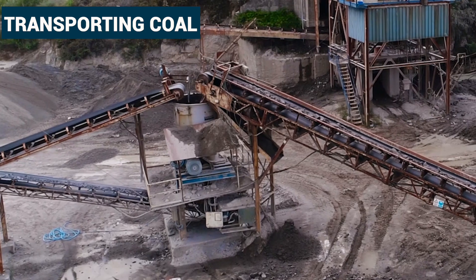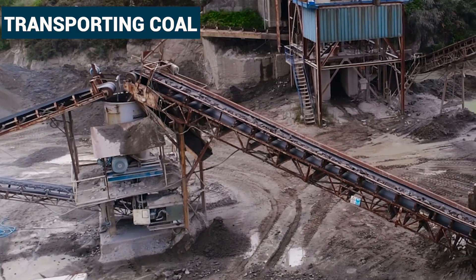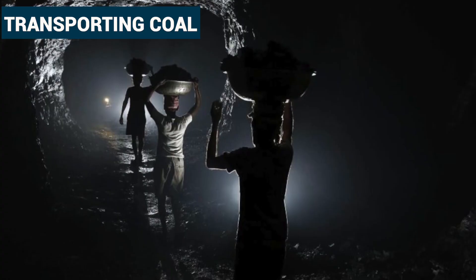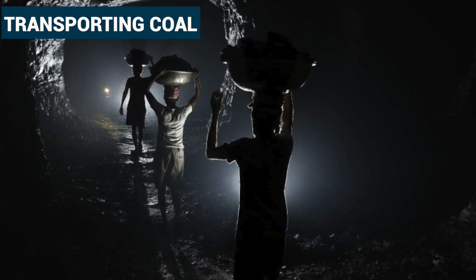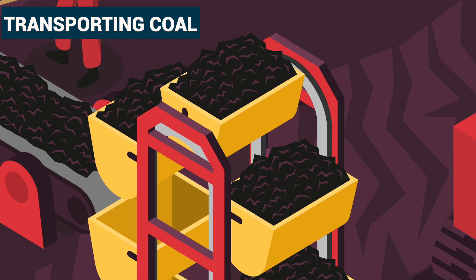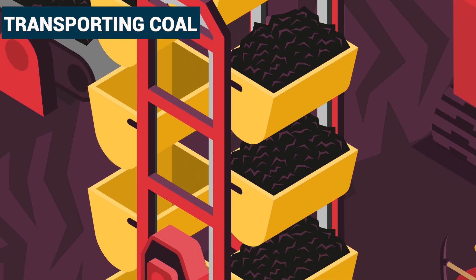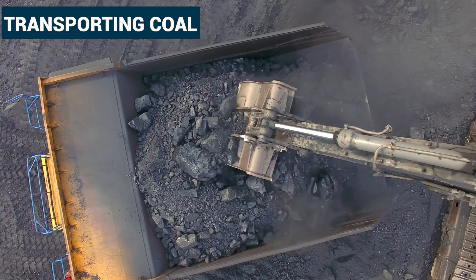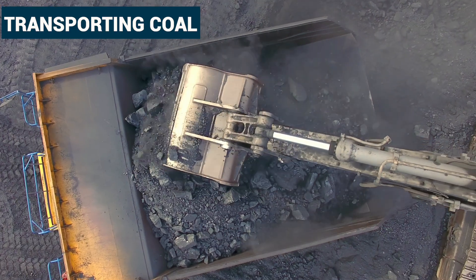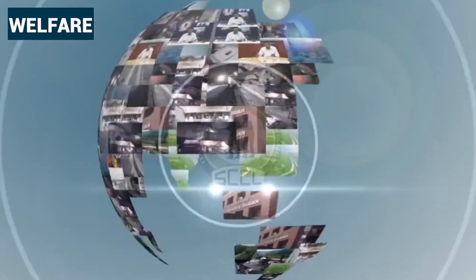Transporting coal: A conveyor belt is used to transport the coal to the surface. In early days, manual labourers were used to load coal onto small wagons. But now, dumper machines load the coal onto the conveyor belts. Coal is then graded and loaded onto trucks and railway wagons.